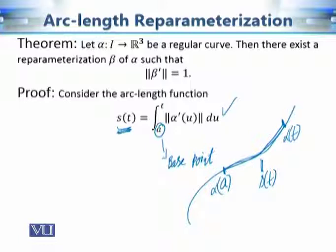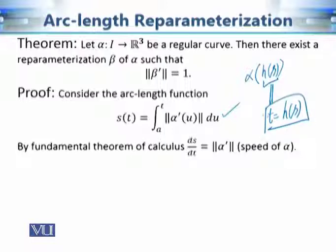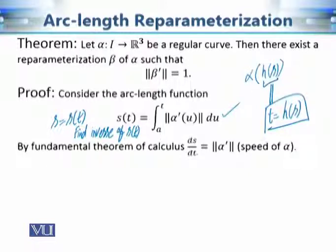To use s as the new parameter, we need to check whether the function s(t) has an inverse. We need to find t = h(s) — that is, express t as a function of s — which is the inverse of s(t). By the Fundamental Theorem of Calculus, ds/dt equals the norm of alpha prime of t, which is the speed of alpha.